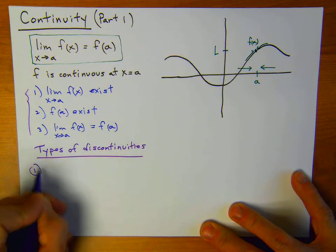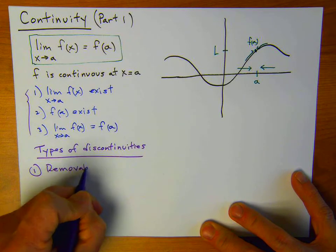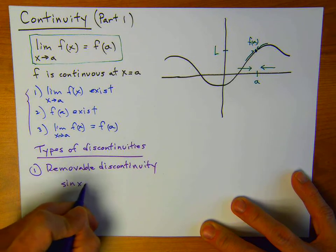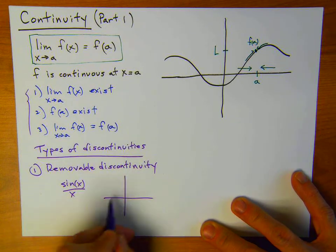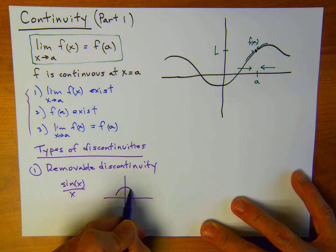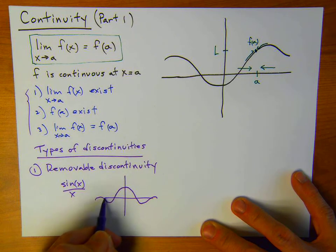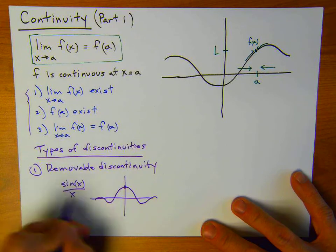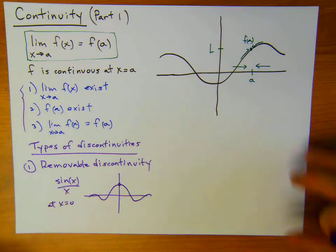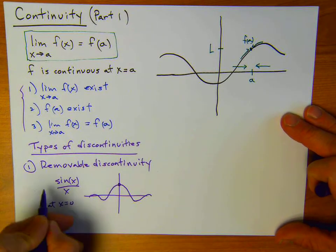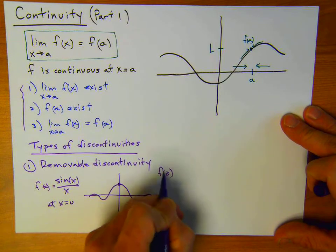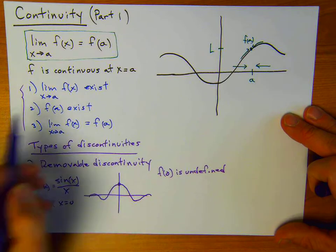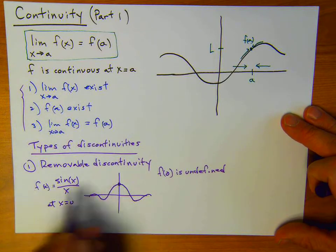The first type I'm going to talk about is called a removable discontinuity. Let me give you an example: sine of x over x. If we look at the graph of that function, it comes up and then is damped out as x gets larger, but there is a hole right at zero. If I define this to be f, then f of zero is undefined, because zero over zero — you can't divide by zero. So condition two breaks down here, and we know that this is discontinuous.